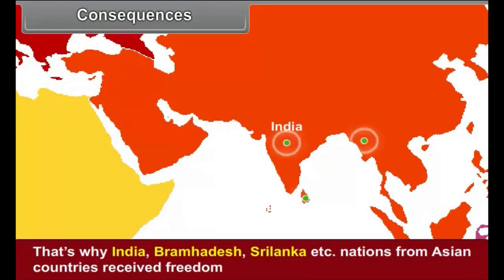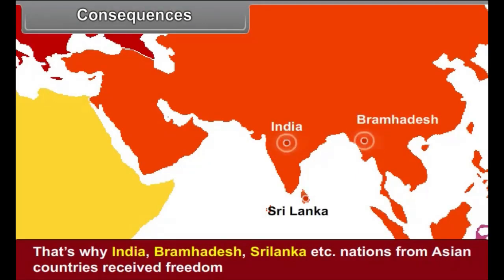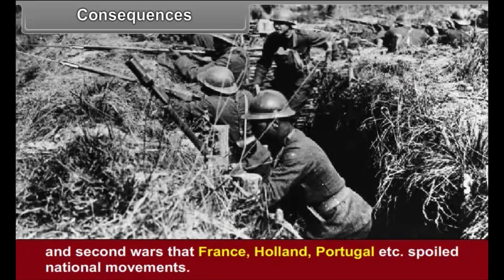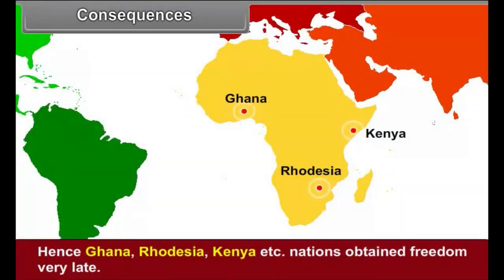That's why India, Burma, Sri Lanka and other Asian nations received freedom. On the other hand, France, Holland, Portugal and others suppressed national movements. Hence, Ghana, Rhodesia, Kenya and other nations obtained freedom very late.